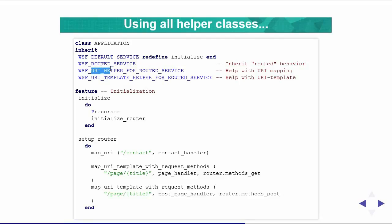The WSF URI helper for routed service provides new routines: map URI, map URI template, and so on. It's pretty simple — you just map the slash contact string to the contact handler. This contact handler object is created in a function lower in this class.